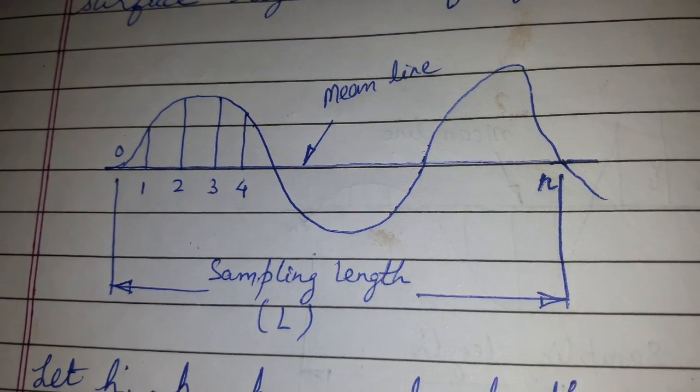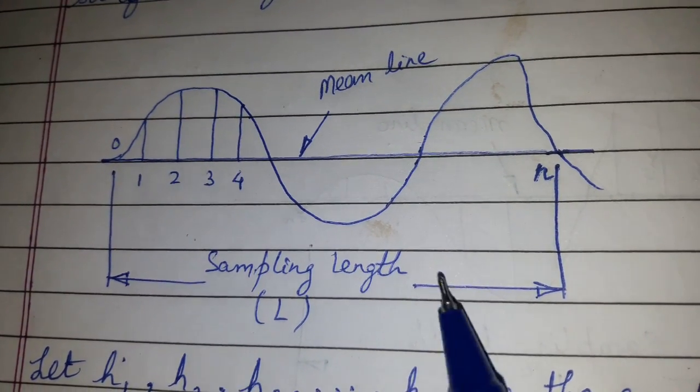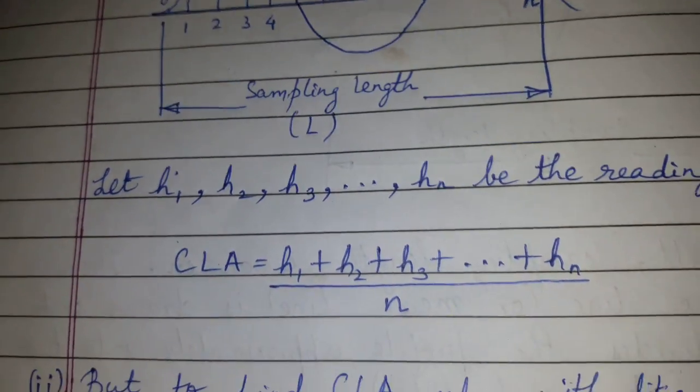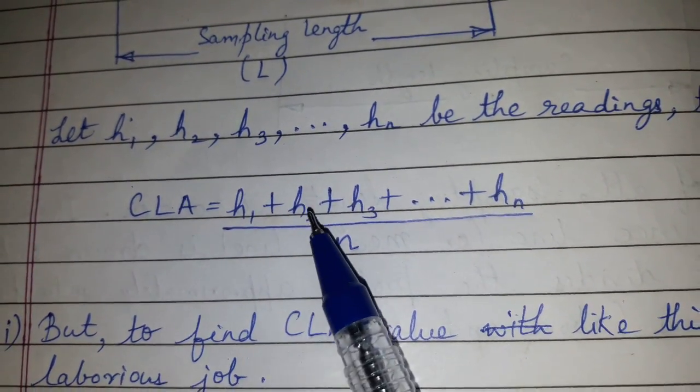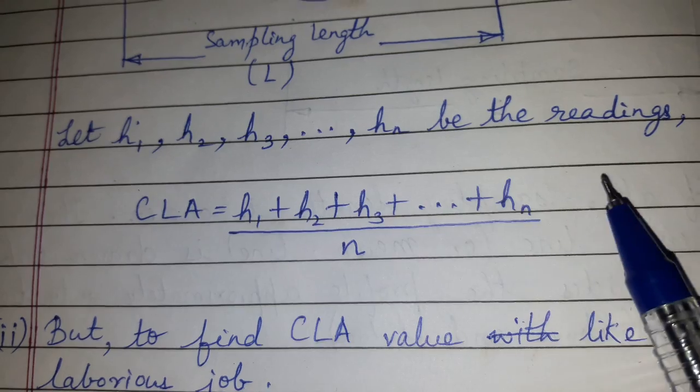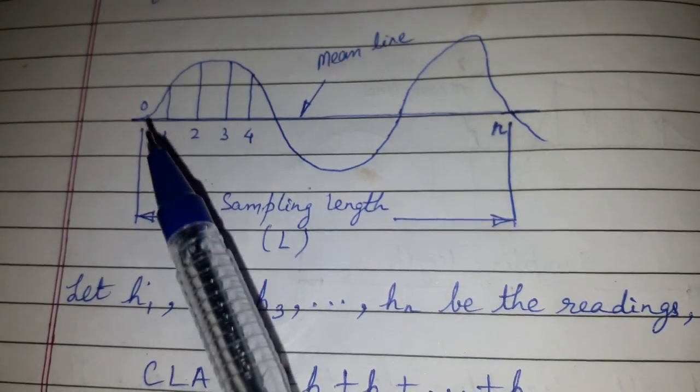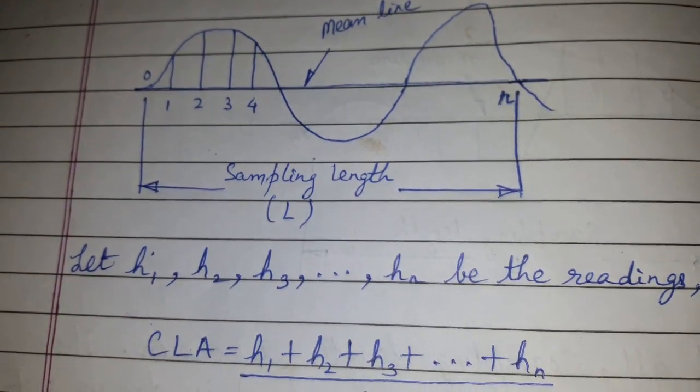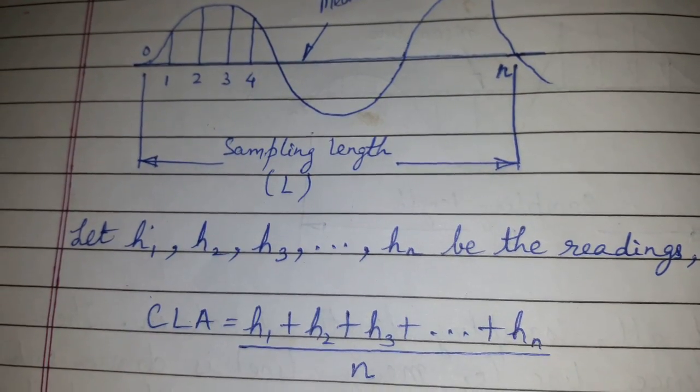are the readings which are obtained for sampling length L, so CLA can be calculated as h1 plus h2 plus h3 up to hn divided by n, where n is the number of divisions. But this is a laborious work